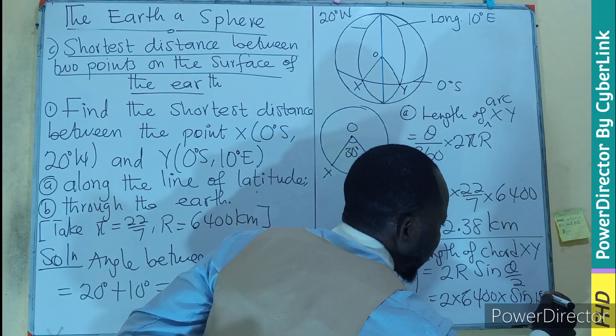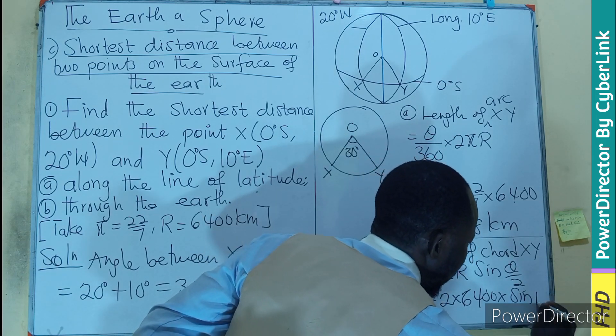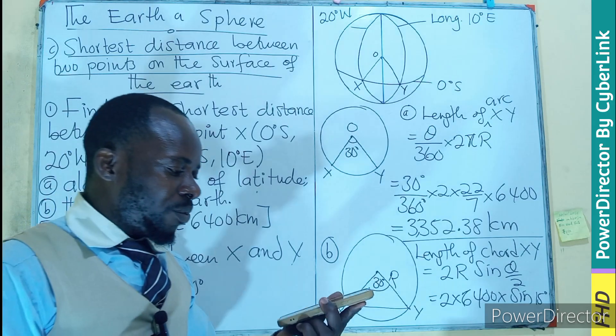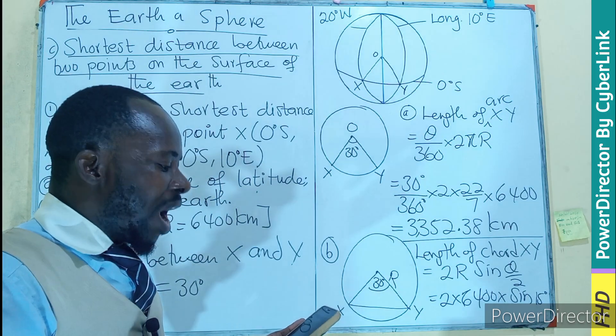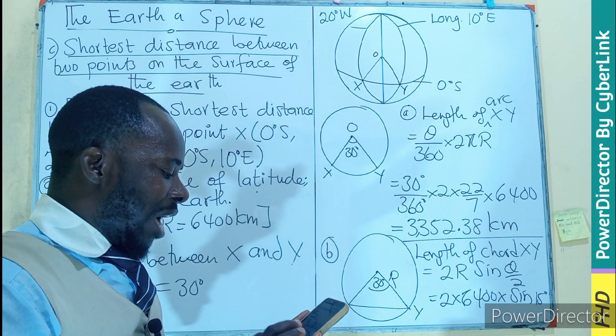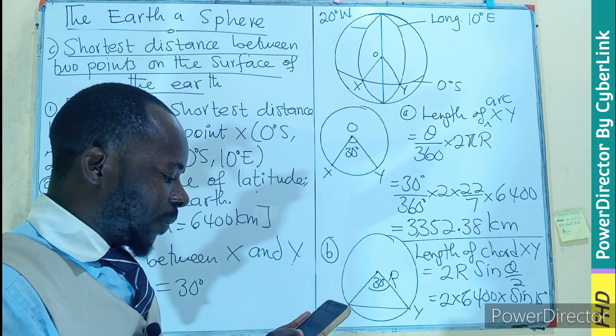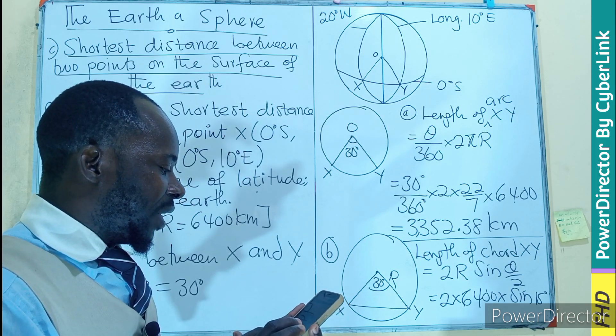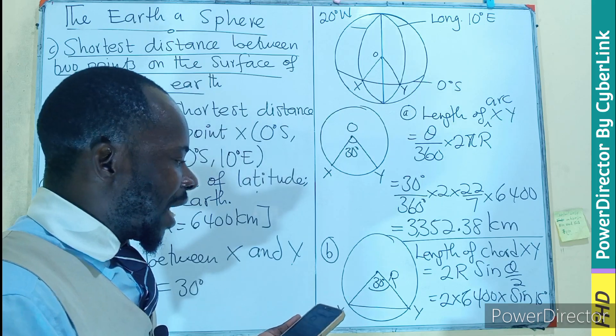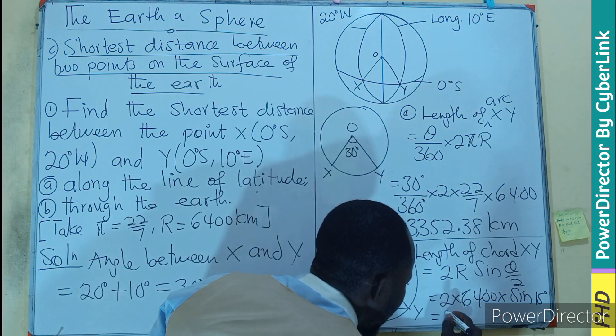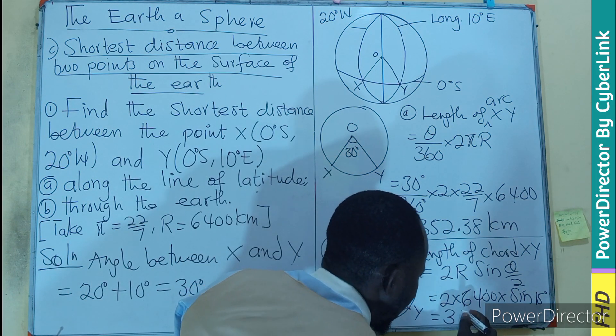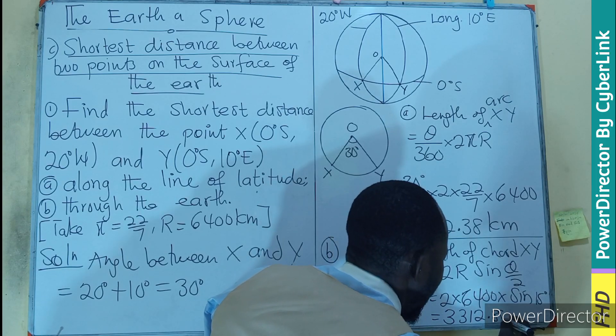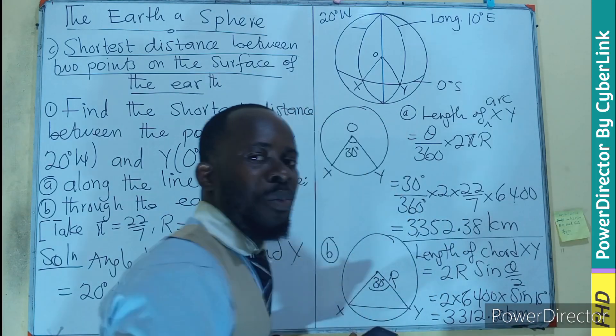So this is going to be 2 times 6400 times sin(θ/2). That will be 15 degrees. So we have 2 times 6400 times the sine of 15 degrees. And that will be giving you 3312.88 kilometers.